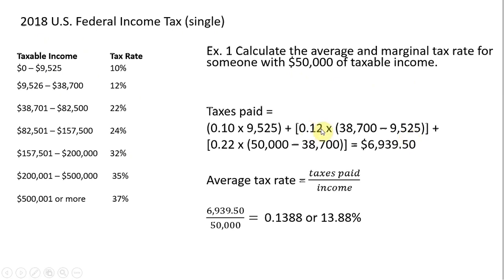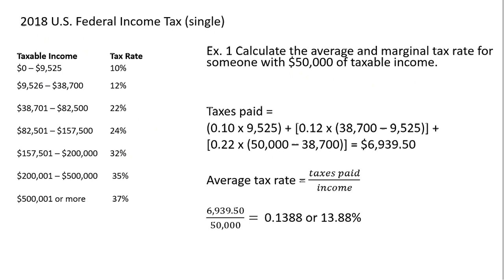Our fifty thousand dollars also brings us into the third tax bracket, which has a tax rate of twenty-two percent. So it's 0.22 times fifty thousand, but once again we have to account for taxes already calculated on the first thirty-eight thousand seven hundred dollars of income, so we subtract that amount from fifty thousand. Doing the math, the total tax bill comes to almost seven thousand dollars.